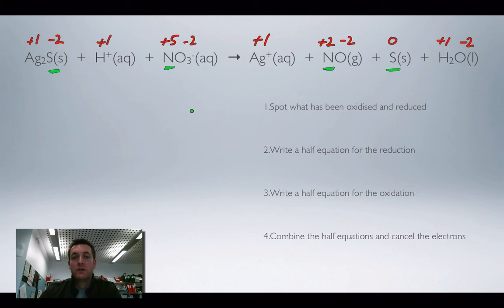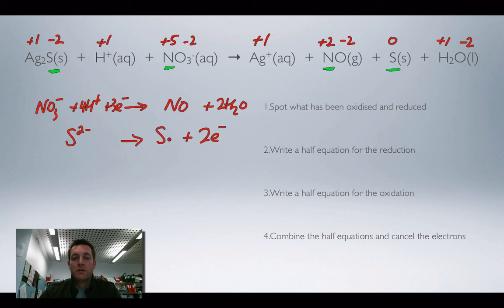So first of all, the reduction. Well, that's the +5 to +2. So, I'm going to have nitrate ions turning into nitrogen monoxide and two waters. And that means I've got to have four H+ over here. And once again, that means three electrons in this equation. The other half equation, I've got sulfide ions, S2-. And they're turning into sulfur. So, they must be giving up electrons. So, there's my oxidation half equation.